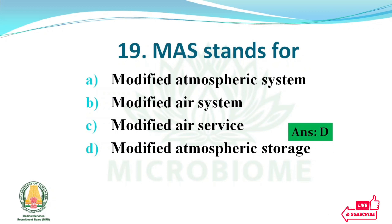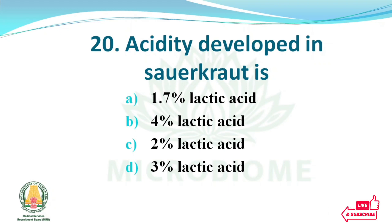The acidity developed in sauerkraut — options: 1.7% lactic acid, 4% lactic acid, 2% lactic acid, 3% lactic acid. The right answer: option A, 1.7% lactic acid.